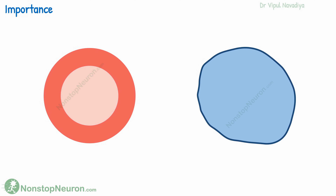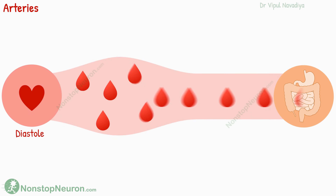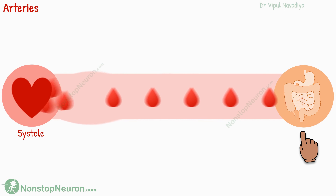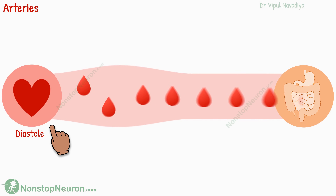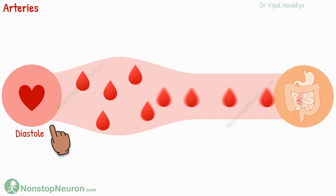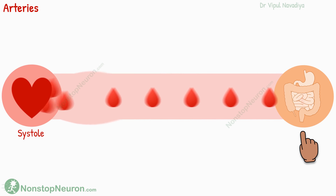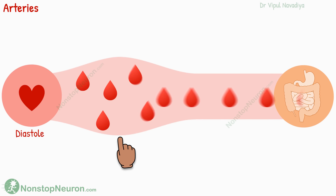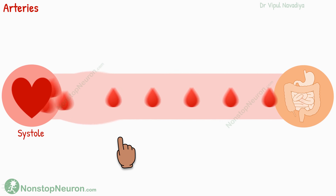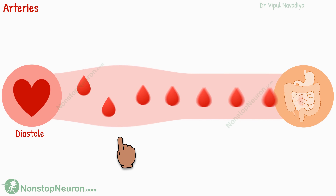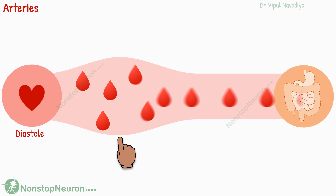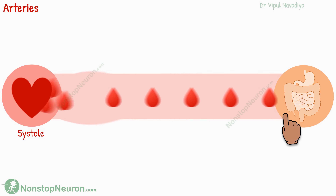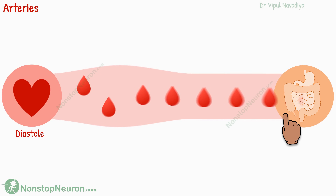The distensibility of both arteries and veins serves important functions. In arteries, it allows smooth blood flow at peripheral organs. The heart does not pump blood continuously — it pumps during systole and rests during diastole — yet flow at peripheral tissues is maintained constant. This is made possible by arterial distensibility. When the heart pumps during systole, the arteries expand and accommodate all the blood. During diastole, when the heart is not pumping, this blood is mobilized. Thus, the distensibility of arteries averages out pressure pulsations and provides smooth, continuous flow to the tissues.